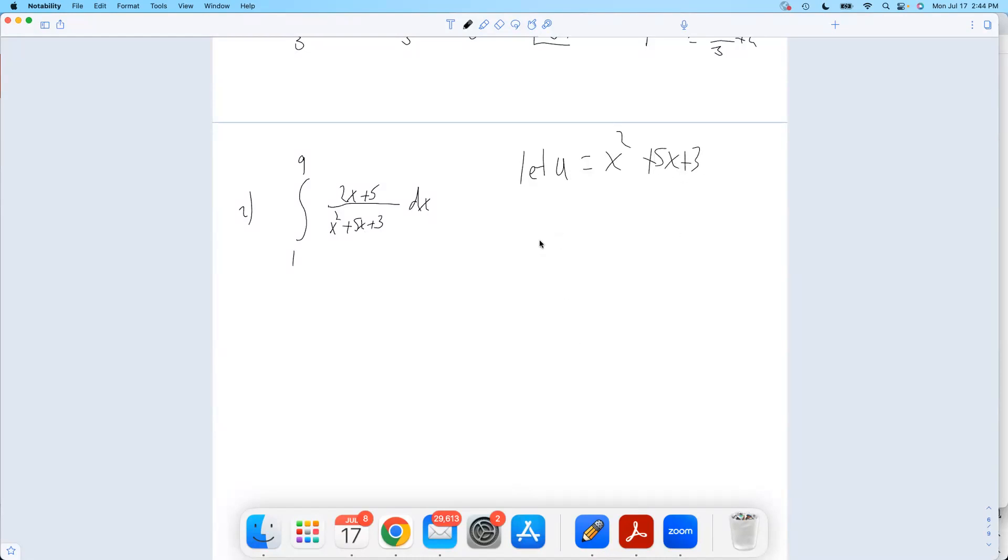Exactly the way it looks, and then take du, take the derivative. What do we get? 2x plus 5 dx, and see if that's sitting right in front of you. Oh, luckily it is. See, here's du, and that's u.